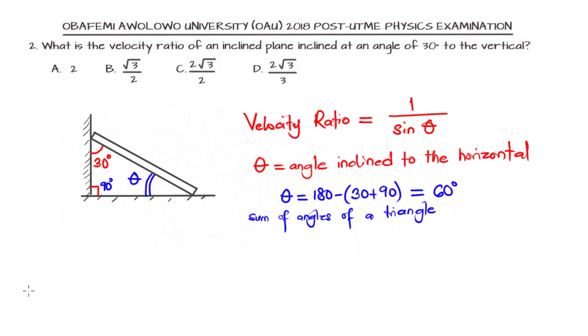Now we can go ahead to plug in the right value into the formula for the velocity ratio. The velocity ratio is 1 over sin 60, not sin 30. And that will be 1 divided by sin 60. Sin 60 is root 3 divided by 2.